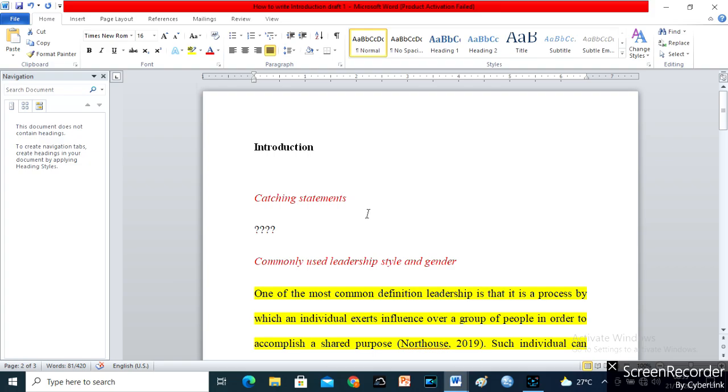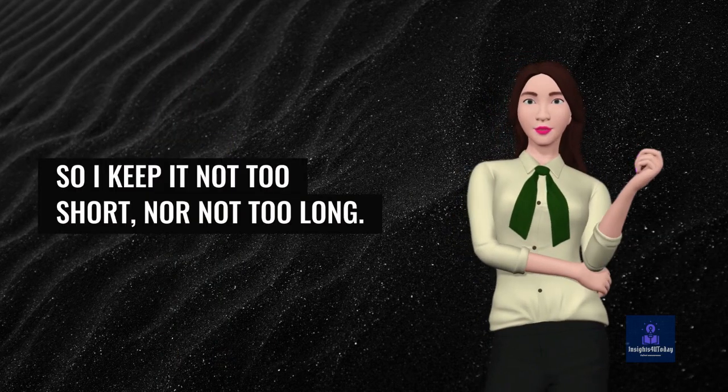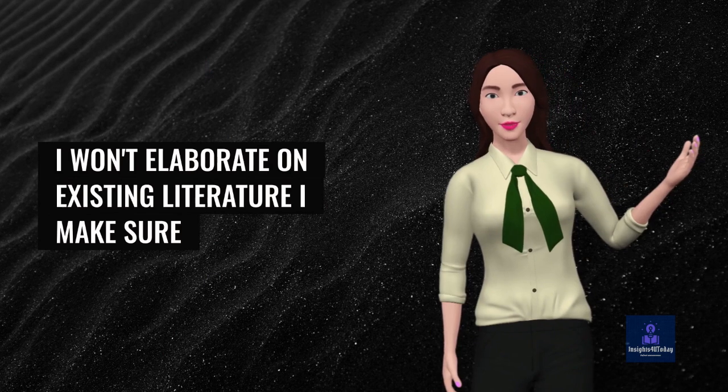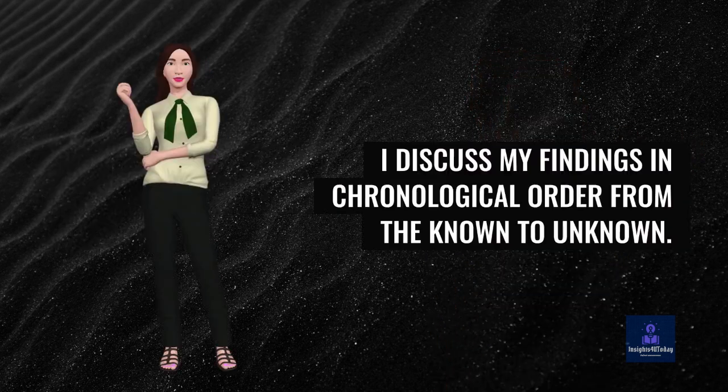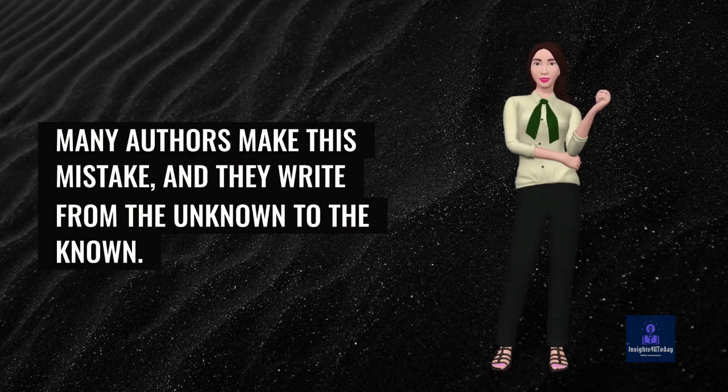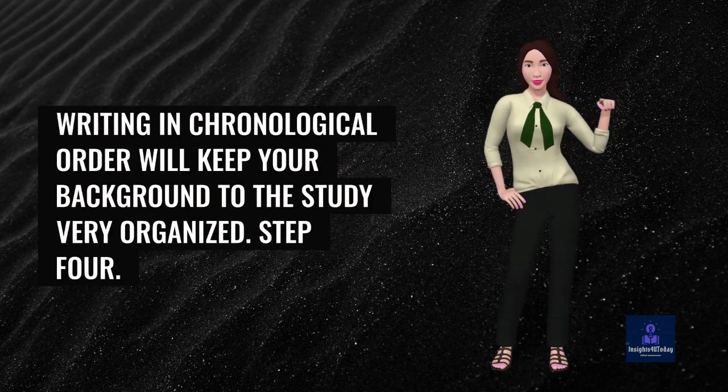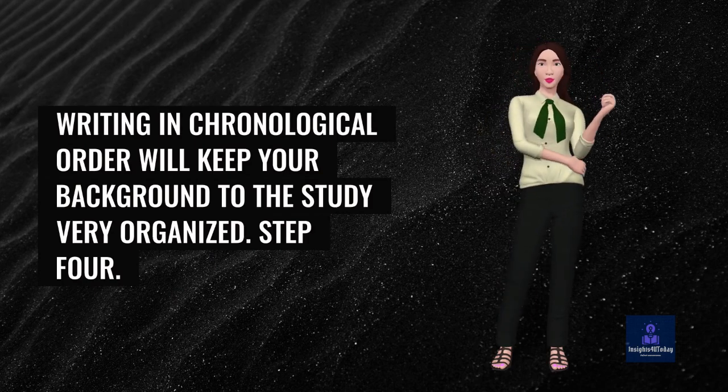I keep in mind that my background to the study is not a literature review, so I keep it not too short, nor not too long. I won't elaborate on existing literature. I make sure I discuss my findings in chronological order from the known to unknown. Many authors make this mistake, and they write from the unknown to the known. Writing in chronological order will keep your background to the study very organized.